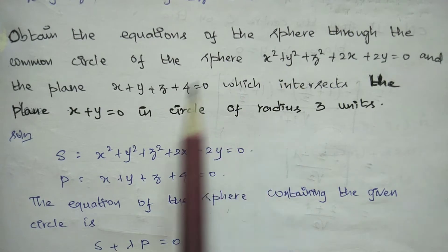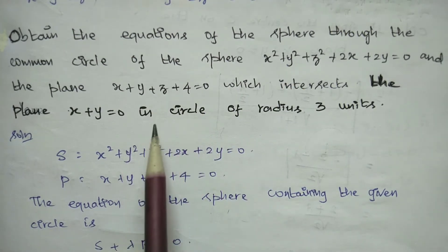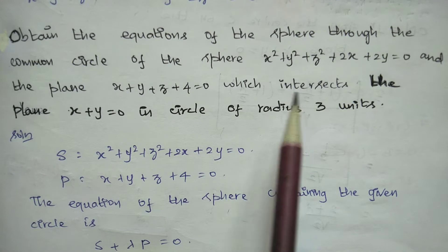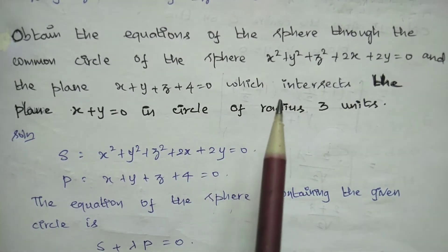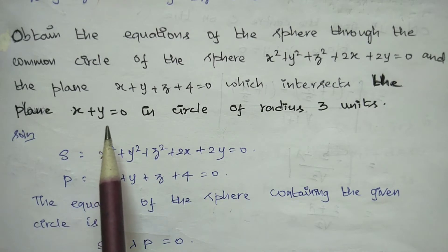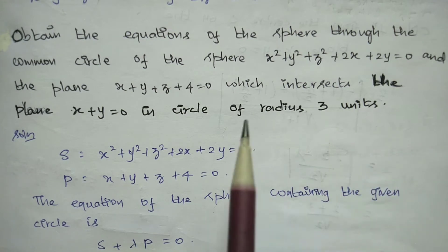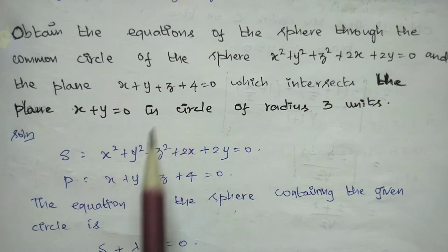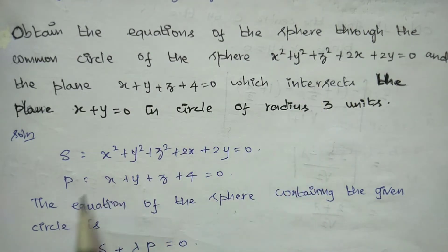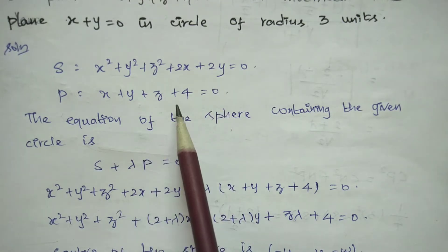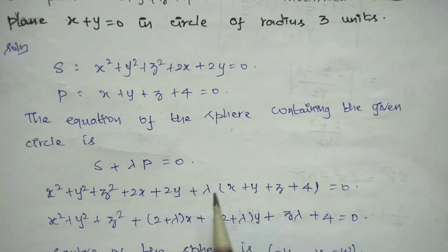We need to find the equation of a sphere. We know that the circle equation is given by the sphere equation S = 0 combined with a plane equation P = 0. So we write the family of spheres as S + λP = 0, where S is the given sphere equation and P is the given plane.